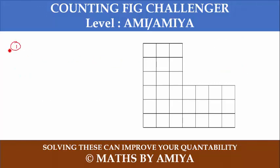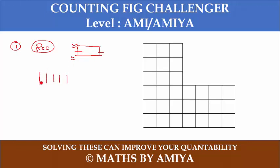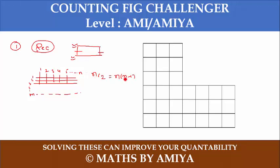We need to work on two concepts. The first one is counting the rectangle. For a rectangle, if we find its construction, we need two horizontal lines and two vertical lines. If you have a set of horizontal and perpendicular lines, with the help of combinations, we need to select two lines from N lines, which is NC2.